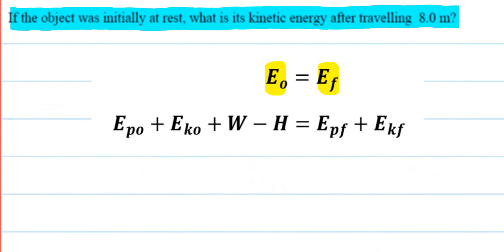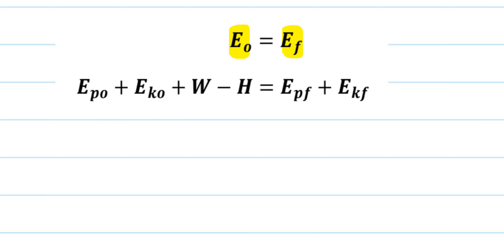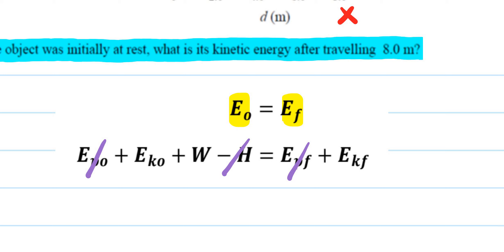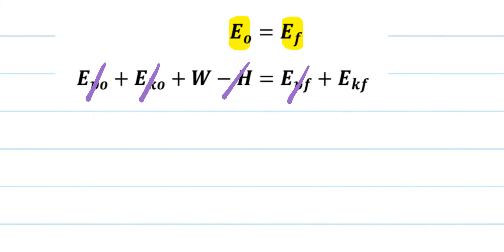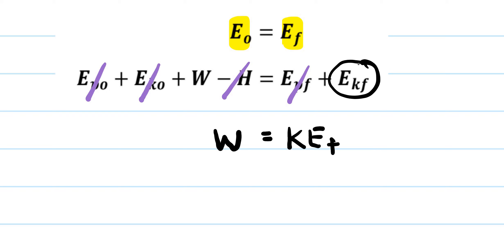Going to the work-energy theorem, we can eliminate potential energy and also eliminate heat energy because there is no friction. The question also tells us the object was initially at rest, so there is no kinetic energy at the beginning. The energy at the beginning equals the work, and the final energy equals the final kinetic energy.